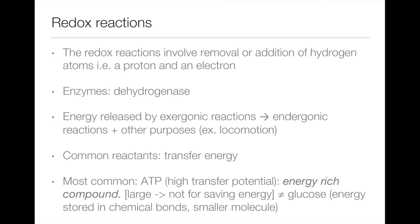Substances with high transfer potentials are called energy-rich compounds. The most common of these types of substances is ATP. It has a high transfer potential and this is why it is used not to save energy but in order to transfer energy. It's not suitable for storing energy because it is a large molecule.